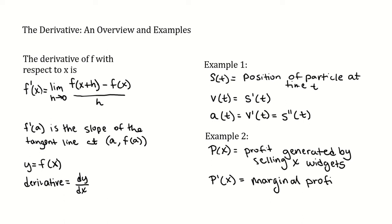Now the marginal profit, we can think of that as the rate of change of the profit. Or if we are selling x widgets, the marginal profit would be the additional profit generated by selling x plus one widgets. So how does selling one additional widget benefit you is the marginal profit.